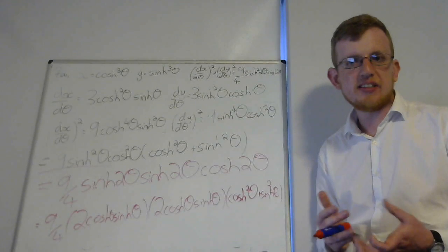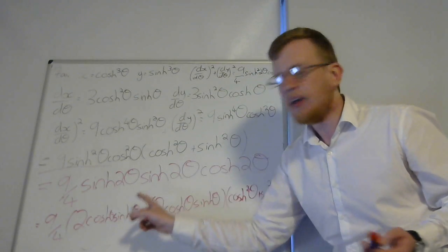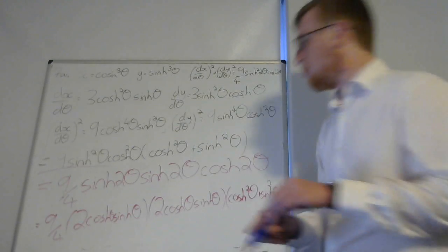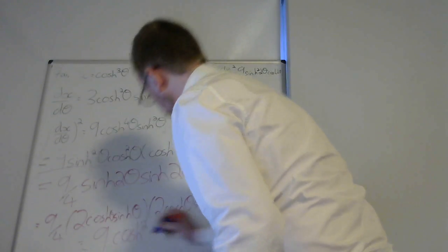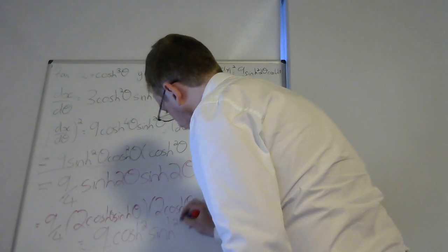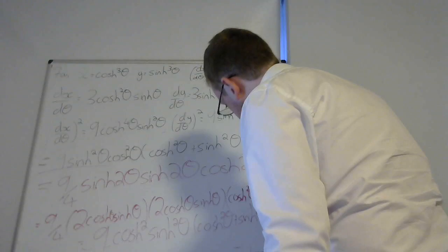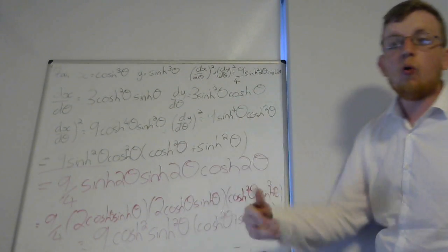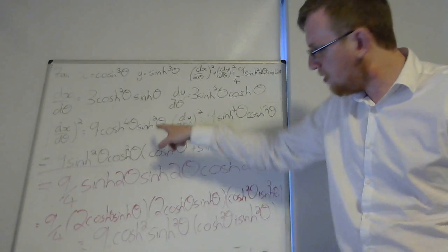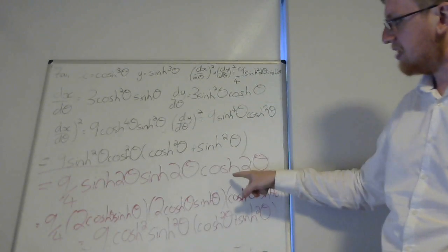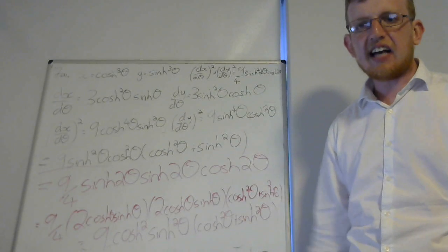So sinh 2 theta is 2 sinh theta cosh theta. We've got that twice. And the cosh double angle formula gives us cosh squared theta plus sinh squared theta. I think we can see it now. 2 times by the 2 gives us 4, and that will cancel out with the 4 here, giving us 9. So we've got 9 cosh squared theta sinh squared theta times cosh squared theta plus sinh squared theta. And have a look at that. We've bridged the gap. This is what we had written here. So all we need to do now is go back and write this line underneath it.